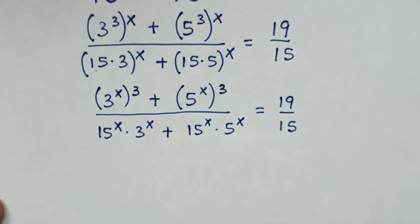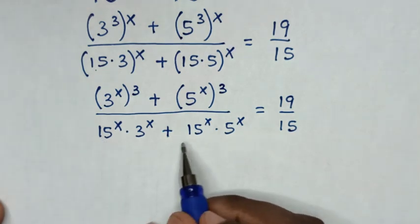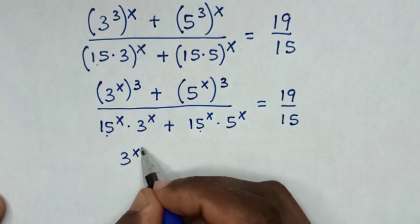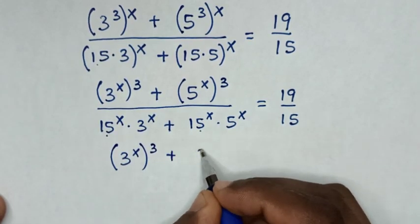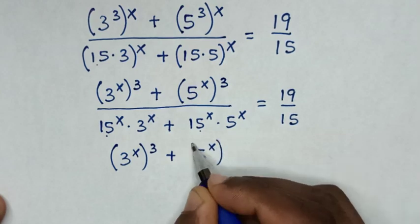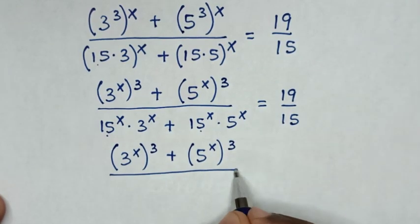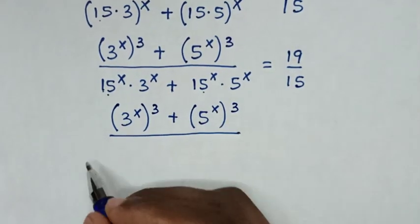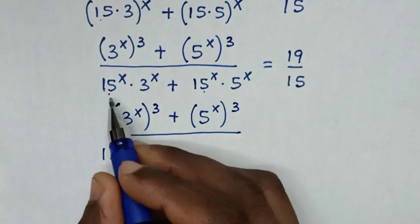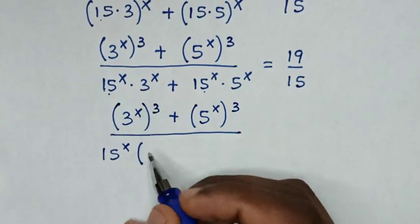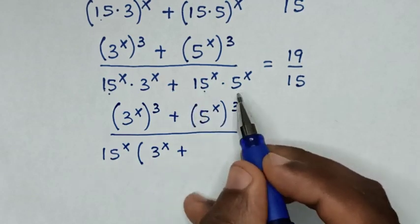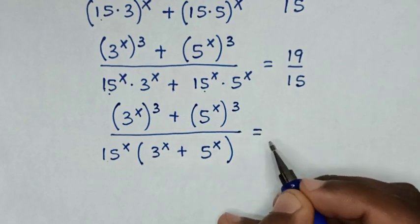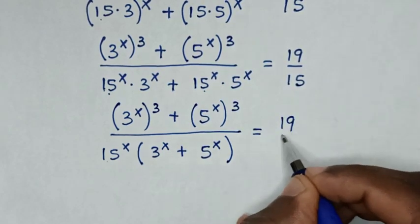From the denominator, 15^x is common, so we factor 15^x out of the bracket. Dividing each term: this divided by 15^x gives 3^x, and this divided by 15^x gives 5^x. So the denominator becomes 15^x times (3^x + 5^x), and the equation is (3^x)³ + (5^x)³ over 15^x(3^x + 5^x) equals 19 over 15.